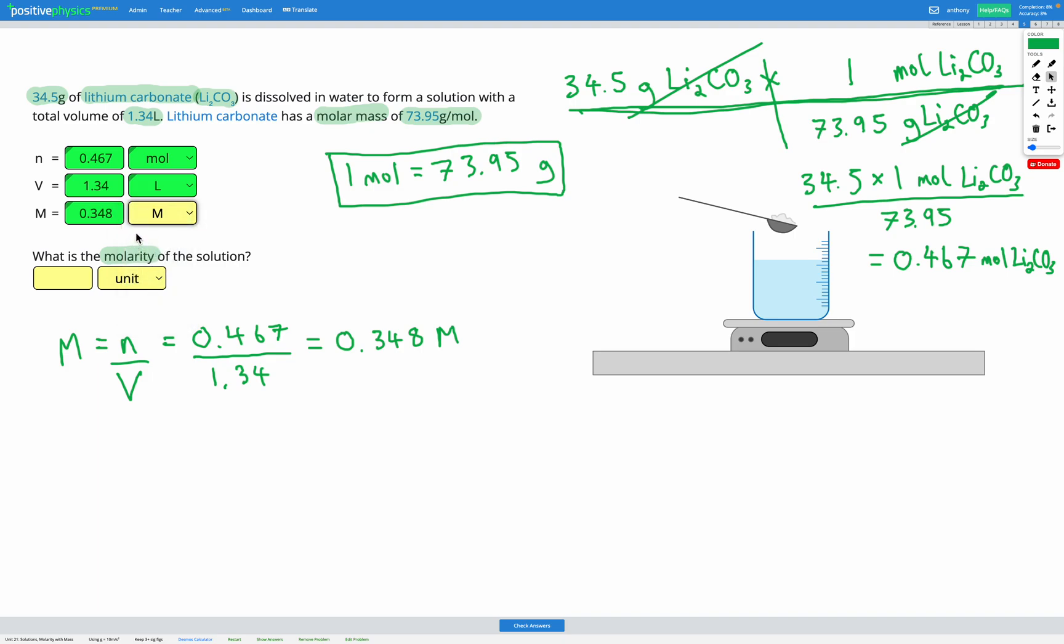Awesome. So we found the molarity. What's the molarity of the solution? That's what we've just found: 0.348 M, which stands for moles per liter. Okay, so this question is exactly the same as the previous skill. We're using our molarity equation. However, if we start off with grams, we're going to have to first convert that to moles using our molar mass and dimensional analysis before we can use it in our calculation.